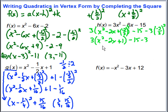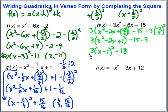This piece factors into a perfect square: 3 times x minus 1 squared — because my b over 2 was negative 1. Then negative 15 minus 3 gives negative 18. So h of x in vertex form is 3 times the quantity x minus 1 squared minus 18. The vertex would be 1 comma negative 18.